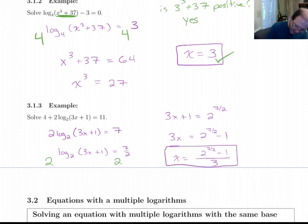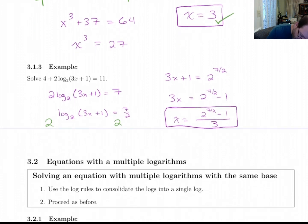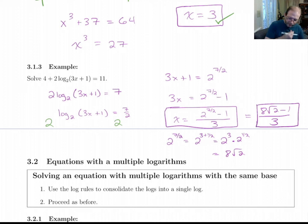Is there a better way to write that? We could rewrite the 7 halves as 6 halves plus 1 half, make it 2 cubed 8 root 2. Let me actually explain what I just said. 2 to the 7 halves is, you write that as 2 to the 3 plus 1 half, which is 2 cubed times 2 to the 1 half. So that's 8 root 2. So I could write this out as 8 root 2 minus 1 over 3. But I'd be happy with it in either form here.